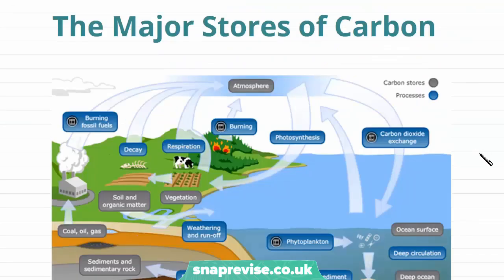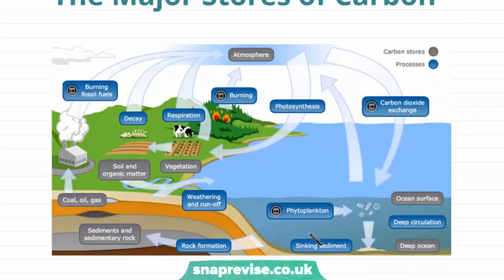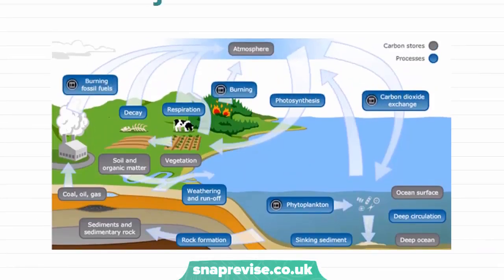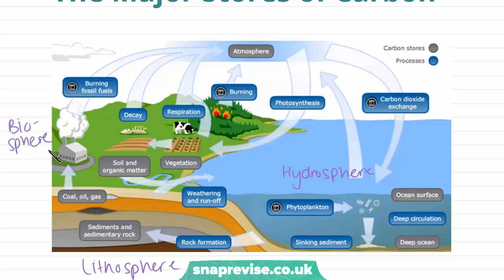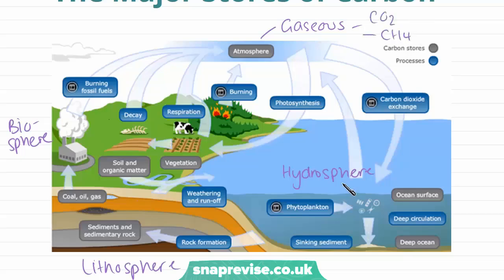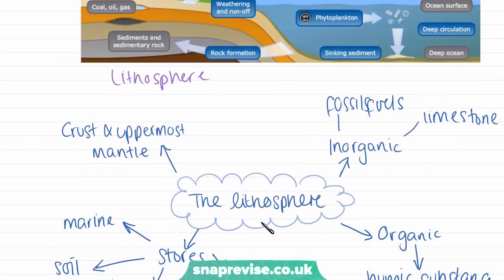Now we're going to look at the major stores of carbon on Earth, divided into four categories summarised in this diagram. These include the hydrosphere, which is water or the oceans; the lithosphere, which is rock and the upper layers of the Earth's crust; the biosphere, which is the living part of the carbon cycle, including soil, plants, and animals; and the atmosphere, where carbon exists in its gaseous form — most likely as carbon dioxide or methane. We'll start with the lithosphere.